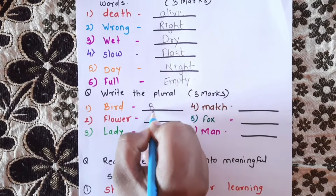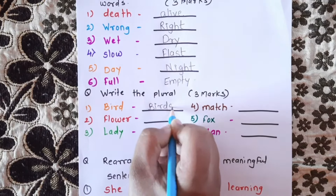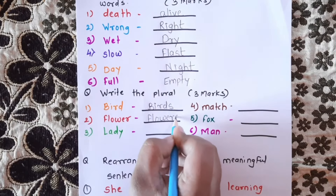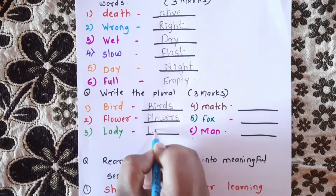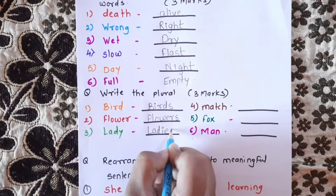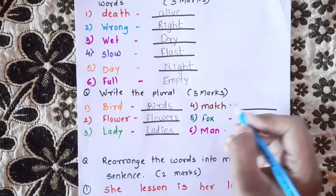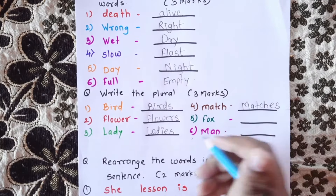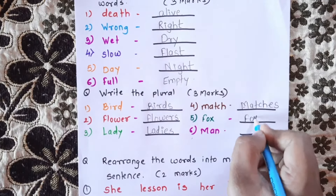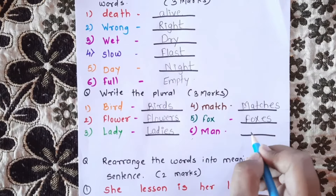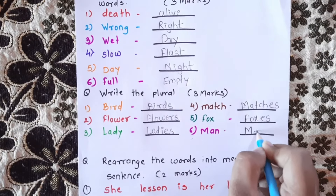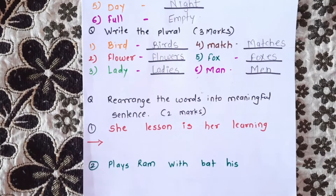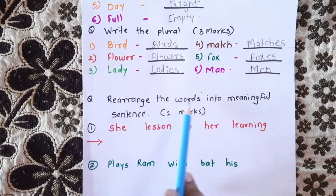Bird — birds. Flower — flowers. Lady — ladies. Match — matches. Fox — foxes. Man — men.